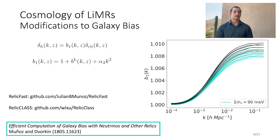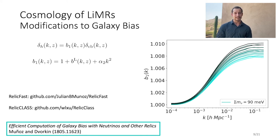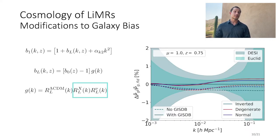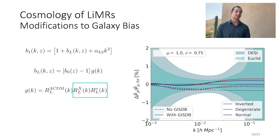We call this modified version of CLASS RelicClass, and it is publicly available. We can use RelicClass to provide the full shape information of the growth-induced scale-dependent bias, plotted here for a degenerate neutrino hierarchy with a total neutrino mass of 90 meV. The lightest color line corresponds to redshift 0.65 and progresses to redshift 1.95 at the darkest line. As an alternative to the full shape information, we can parameterize this effect, which appears as a step at some scale with a redshift-dependent amplitude. For each LEMUR, including neutrinos, we add a multiplicative term to the bias that characterizes where the growth-induced scale-dependent bias turns on for that relic.